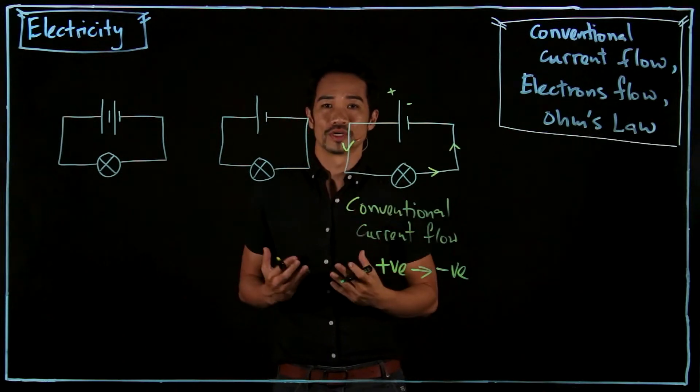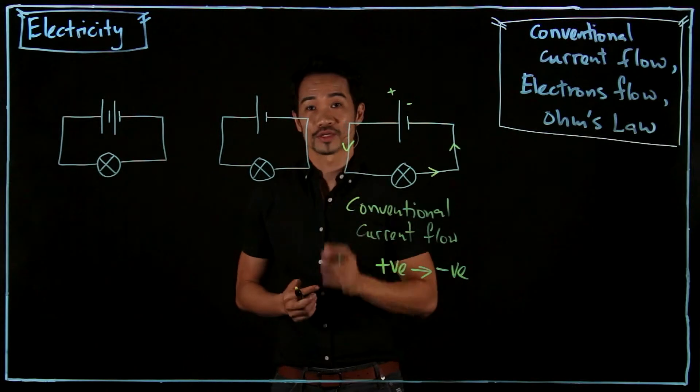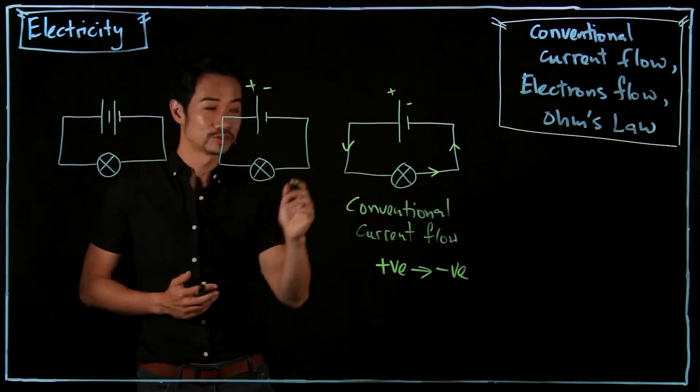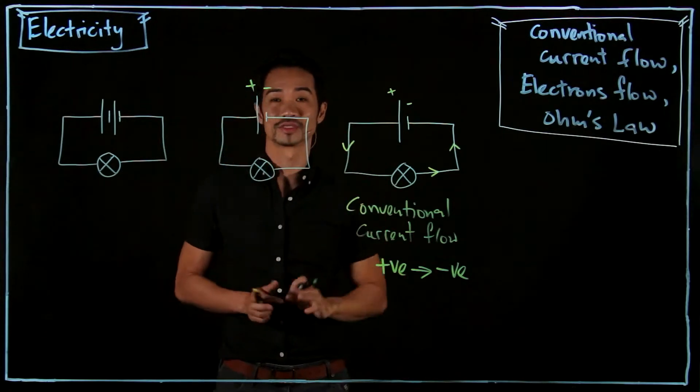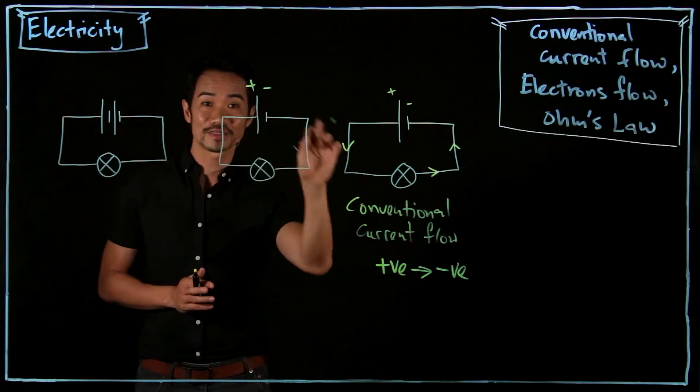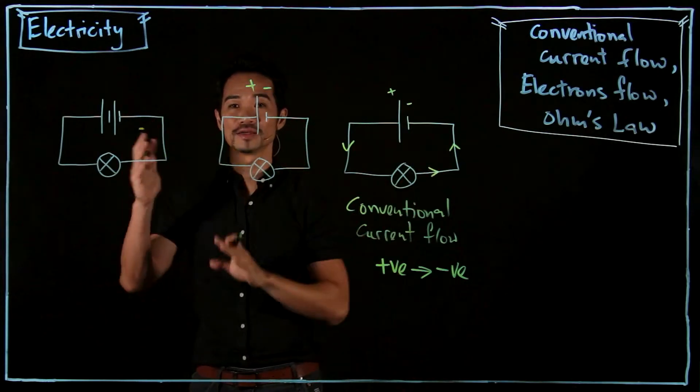And then later on, through the availability of better research and equipment, you know what they realized? They realized that the electrons, current is the flow of electrons, they realized that the electrons actually flow from negative to positive. Oh my gosh, it is the entire opposite.